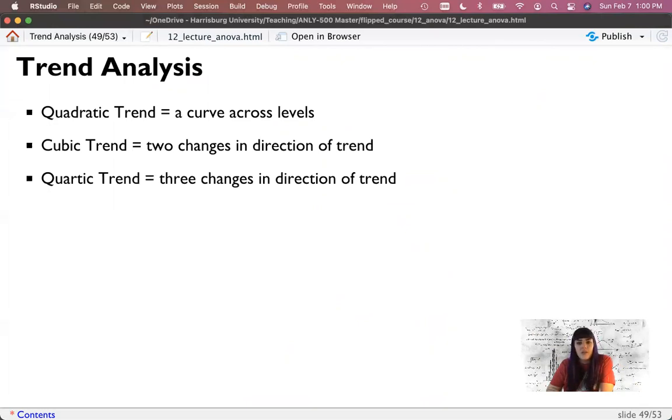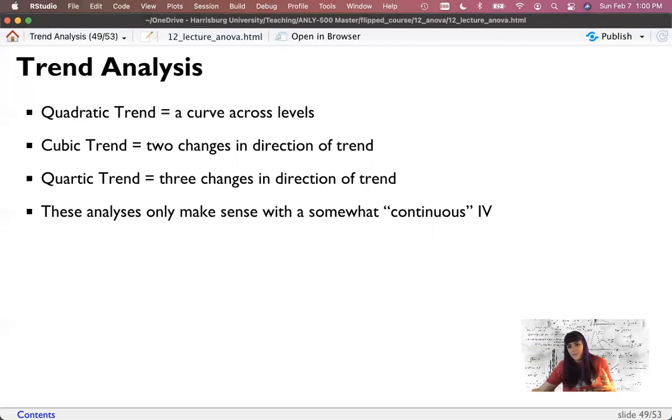Now, a quadratic trend is a curve across levels. It could be up or could be this way or a smile away. A cubic trend is two changes of direction and a quartic trend is three changes in direction. Past that is stochastic and you should not be using these analyses. You can do more than this, but then it gets totally bonkers. So this analysis, remember, only makes sense with a somewhat continuous IV. It does not make sense for like three different favorite colors. Like there's no trend, there's no continuum there.